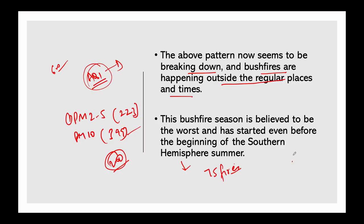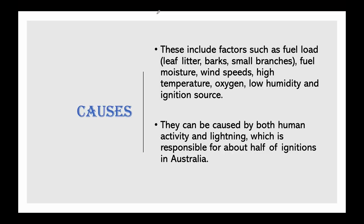On a particular day, about 75 fires were ablaze in Australia. Out of these, nine were at the emergency level and 37 were not contained. The day also saw over 300 new bushfires break out.